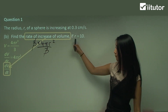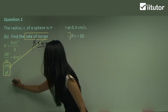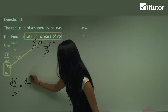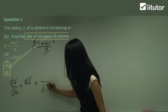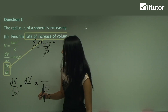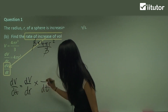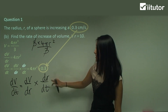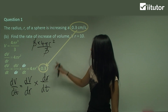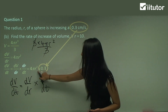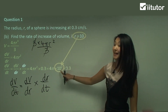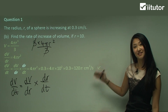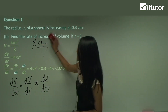The rate of increase for volume will be dV on dt. Again, dV on dt has to separate into two separate rates of change: dV on something multiplied by something on dt. Since we know what dV on dr is, it makes sense to put dr there. We also know that dr on dt equals 0.3. So substituting this in, and with r equals 10, we calculate 120π centimetres cubed per second. Because we're working with volume, it's centimetres cubed.